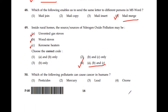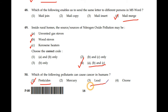Question number 50: Which of the following pollutants can cause cancer in women? Pesticides, mercury, lead, ozone — the correct answers are 1 and 3: pesticides and lead.